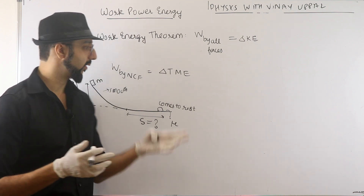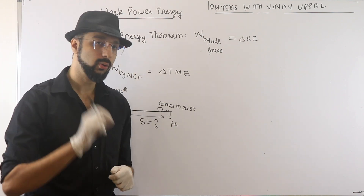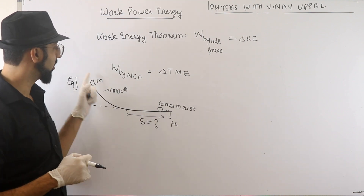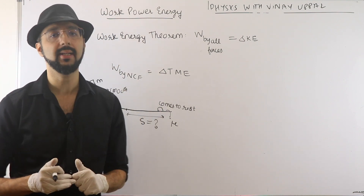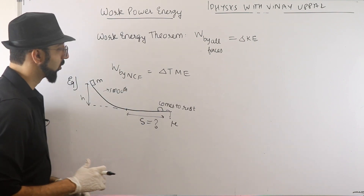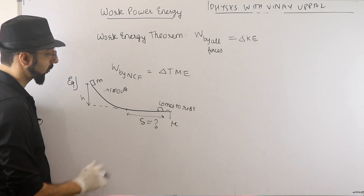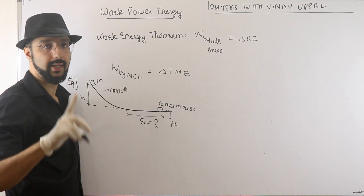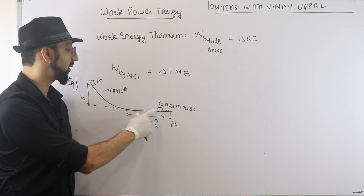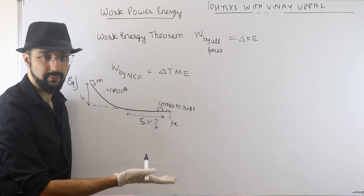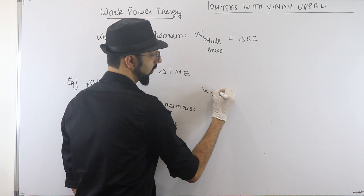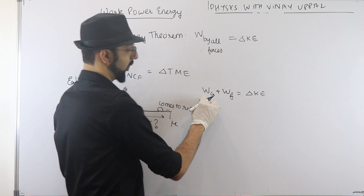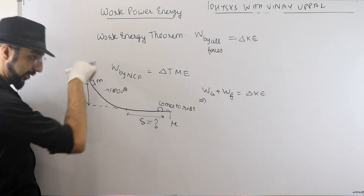One way is to figure out the speed at the bottom point, then use the work-energy theorem or kinematics. However, the work-energy theorem gives us a way to quickly calculate the distance by directly writing it from the initial to the final position. Writing the work-energy theorem directly: work done by gravity plus work done by friction equals change in kinetic energy. How much does gravity do? H is the height dropped, so it does mgh.